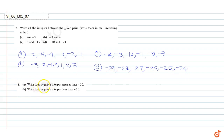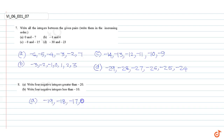Question number eight: write four negative integers greater than minus twenty. Four negative integers greater than minus twenty are minus eleven, minus twelve, minus thirty, and minus forty. These are our answers.